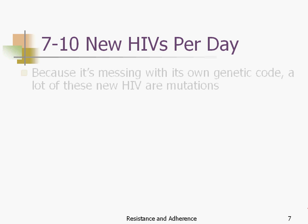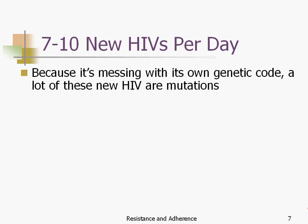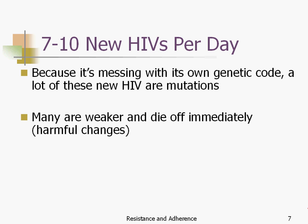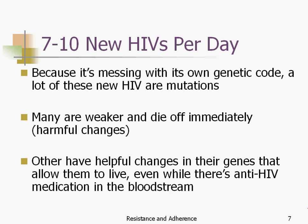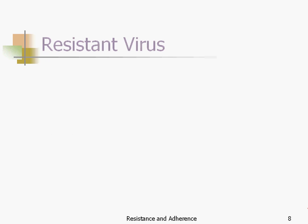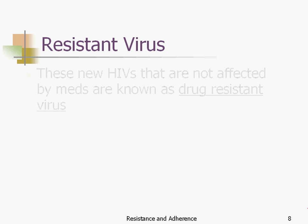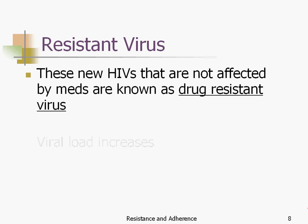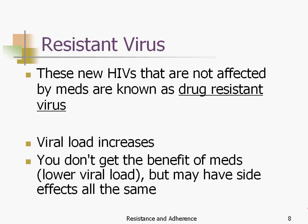We have seven to ten new HIV virions per day. Because HIV is messing with its own genes, a lot of these new HIV are mutations — they have small changes. A lot of them are weaker and die off immediately because they have harmful changes. But others have helpful changes in their genes that allow them to live even when there's anti-HIV medication in the bloodstream. That is the virus we call resistant virus — the new HIVs not affected by meds are known as drug-resistant virus. If someone is on meds and has developed drug-resistant virus, their viral load keeps rising and they don't get any benefit from the meds, but they still have the side effects.